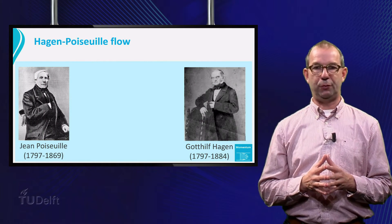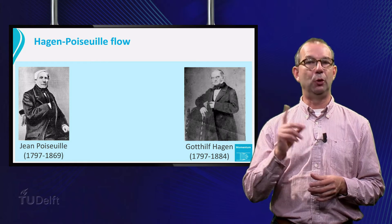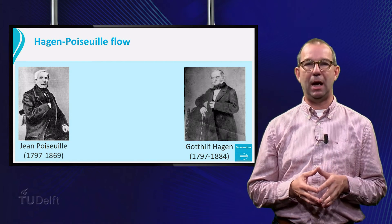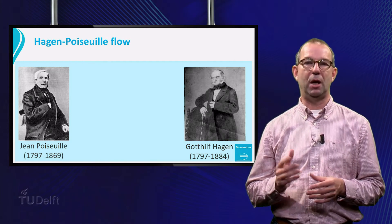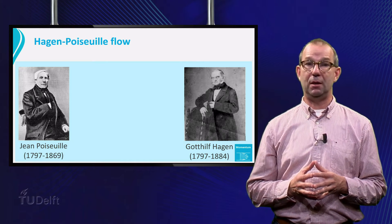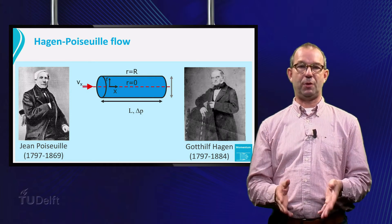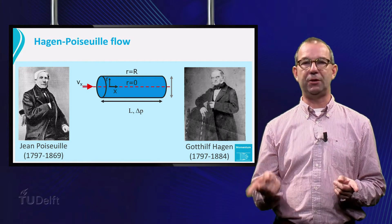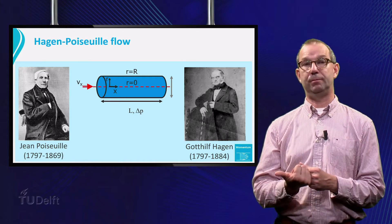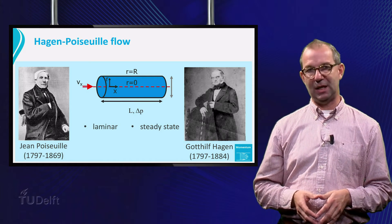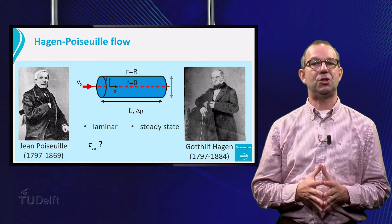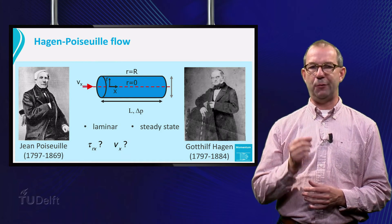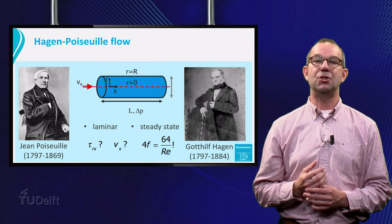Our next example will deal with flow through a straight tube. Again the fluid will be Newtonian. It is known as Hagen-Poiseuille flow after the French researcher Poiseuille and the German Hagen who independently derived the equation for this flow around 1840. It will also bring the pressure into the equation. The geometry is a straight cylindrical pipe. It has a radius r and a length l. Over this length, a pressure drop delta p forces the fluid to flow from left to right. The fluid flows laminar and in steady state. What is the shear stress profile in the fluid? And what is the velocity profile? Finally we are going to see that the fanning friction factor for Poiseuille flow is indeed exactly 64 over Reynolds.